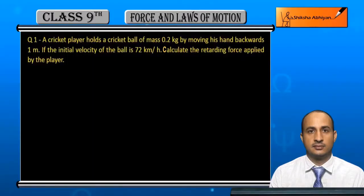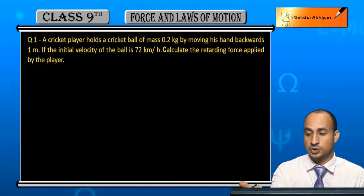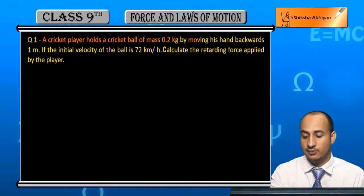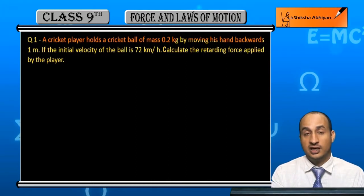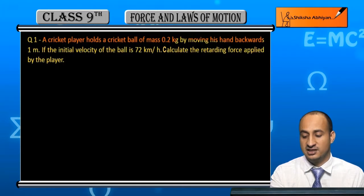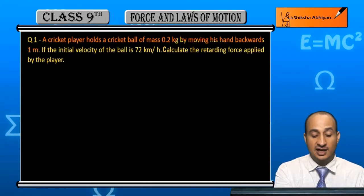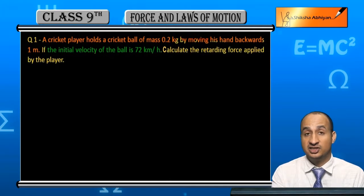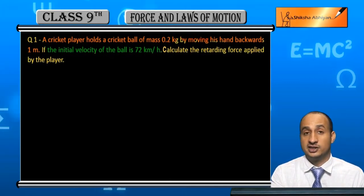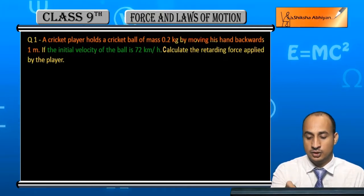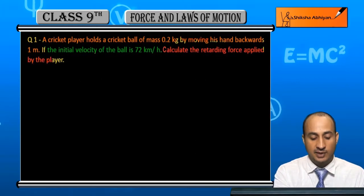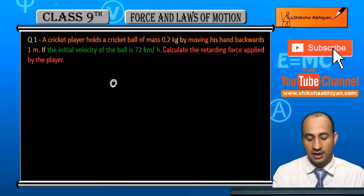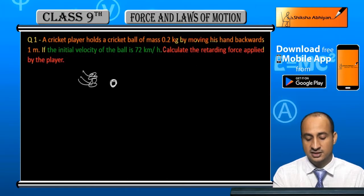The first question: a cricket player holds a cricket ball of mass 0.2 kg. By moving his hand back by a distance of 1 meter, he catches the ball. The initial velocity of the ball is 72 km per hour. We need to calculate the force applied by the player to catch the ball.